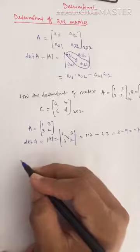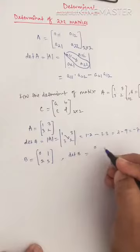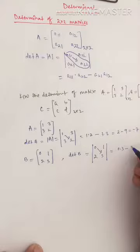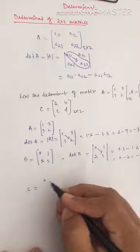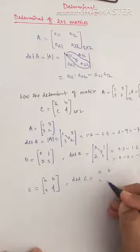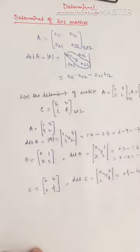The second matrix B = [0, 1; 2, 3]: the determinant of B is 0×3 minus 1×2, which gives 0 minus 2, equal to minus 2. And the third example C = [a, b; c, d]: the determinant of C is the multiplication of diagonal elements minus multiplication of non-diagonal elements, which is a·d minus b·c. That is a very general example.